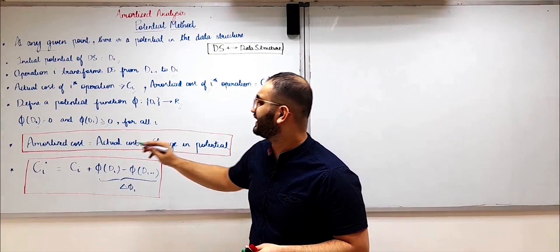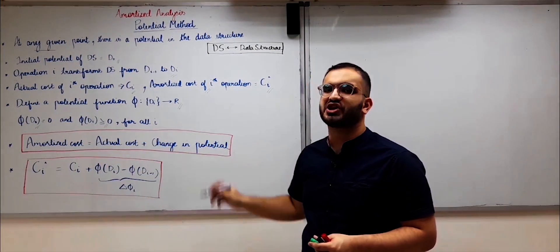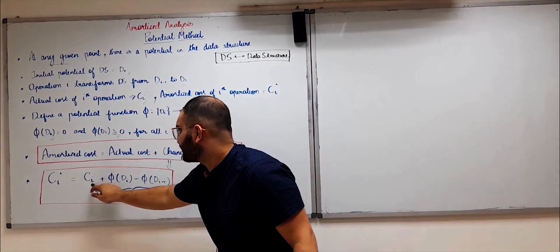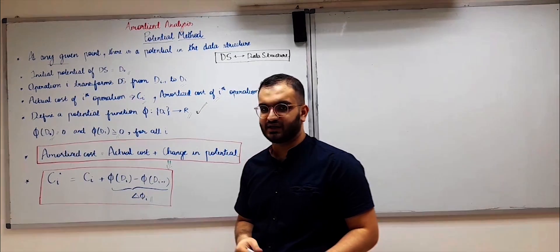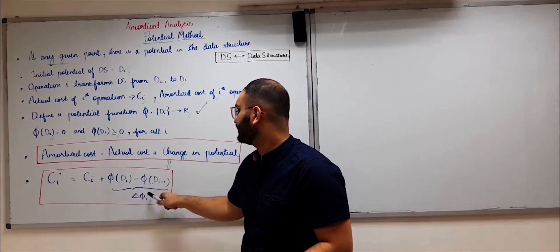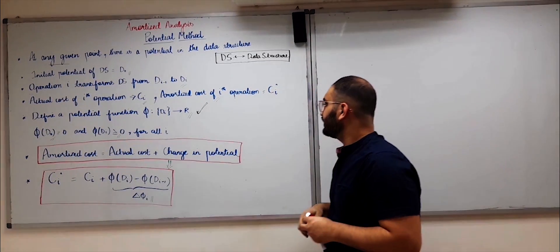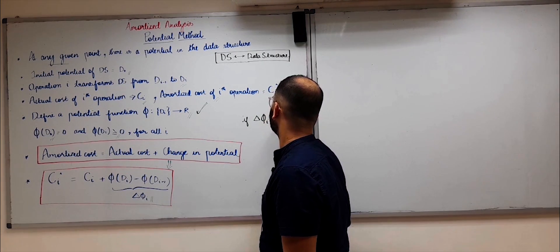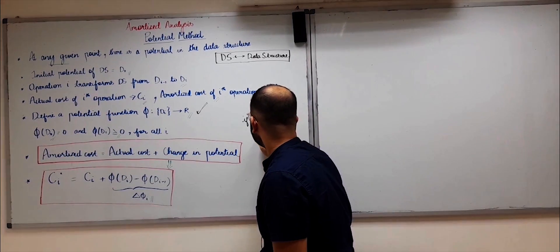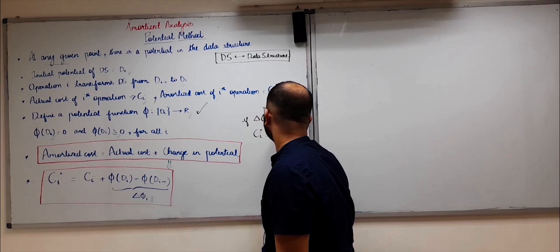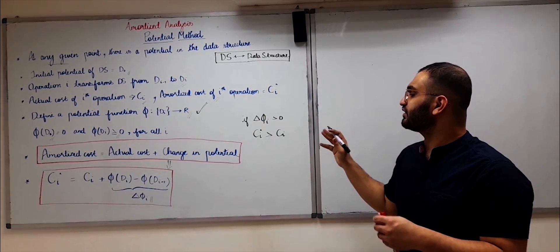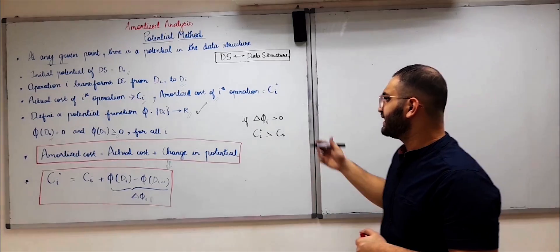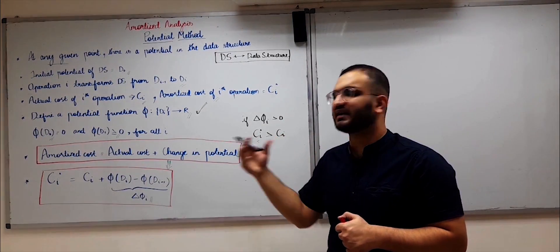We define a potential function where the initial potential is 0 and later on the potential should be anything greater than or equal to 0. The potential method tells us that the amortized cost is equal to the actual cost plus the change in potential. In terms of symbols: c_i_cap = c_i + Φ(d_i) − Φ(d_(i-1)), which boils down to delta Φ_i. If delta Φ_i is greater than 0, this means c_i_cap is greater than c_i — a situation of overcharging, where you have overestimated the time complexity of the operation.